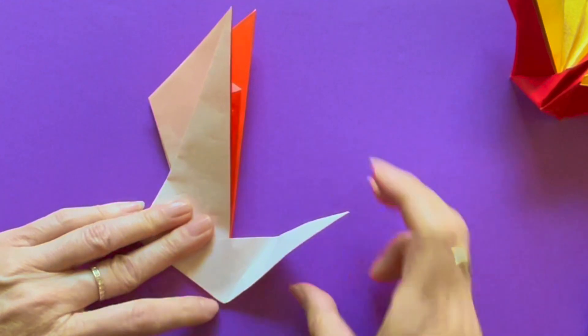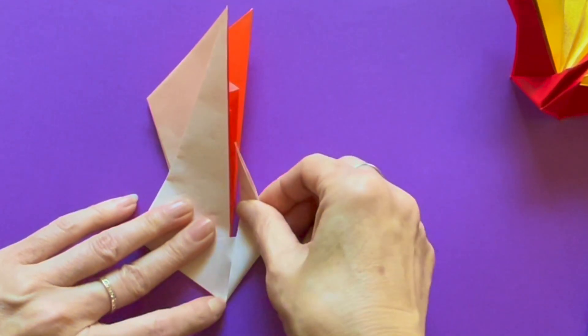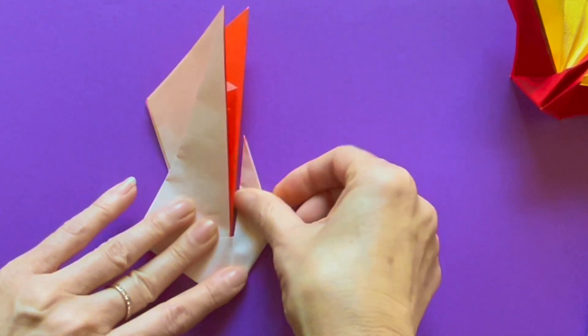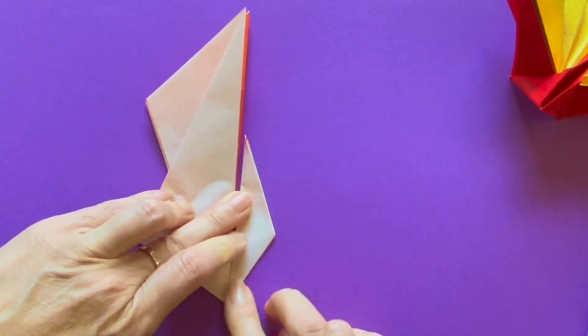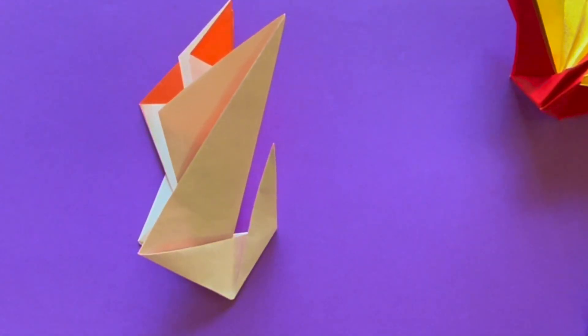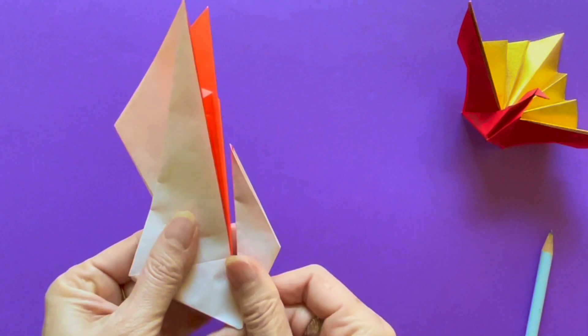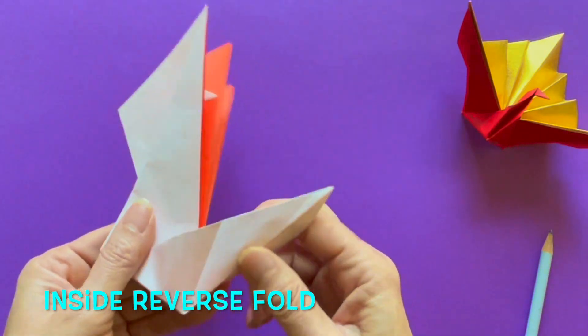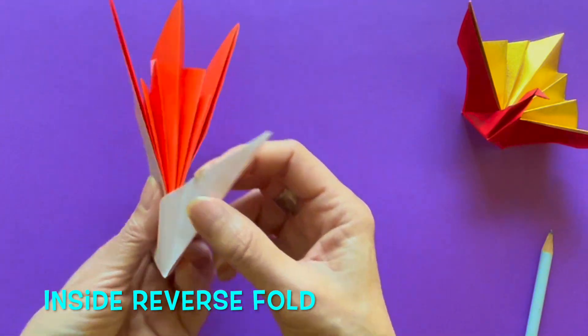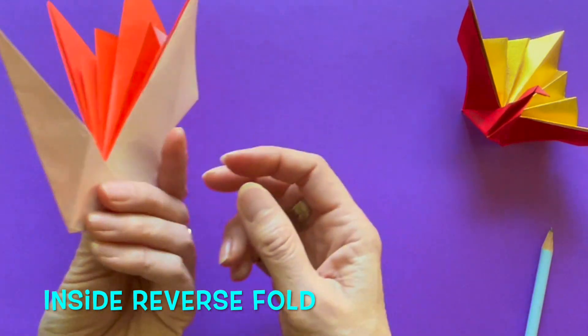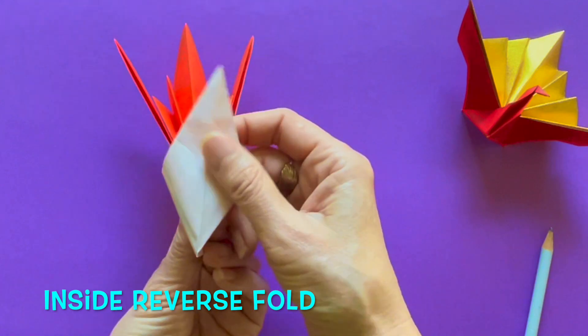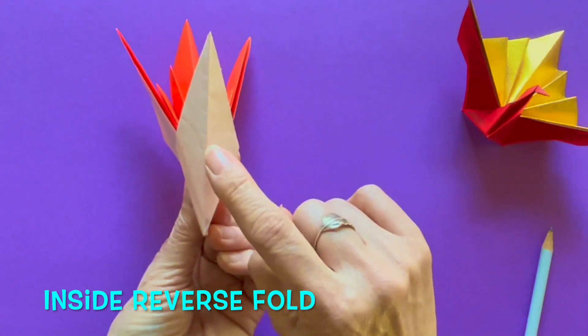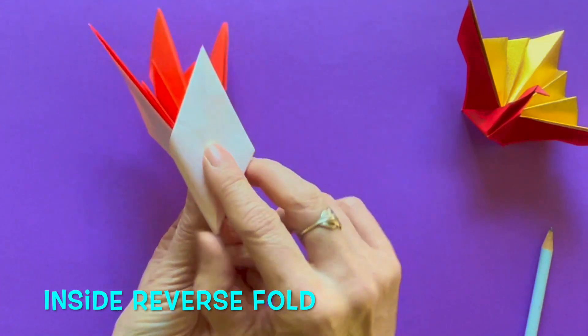Next, you will fold from the bottom corner and fold the tip of the boat up. Crease hard. And next, unfold. We'll do inside reverse fold. I'll do step by step. From the bottom, open up the bottom part.